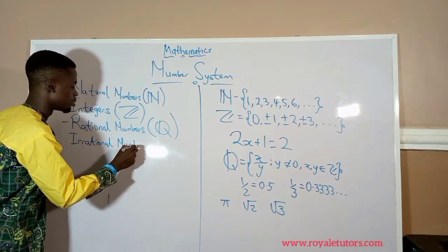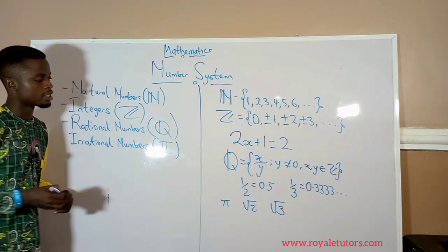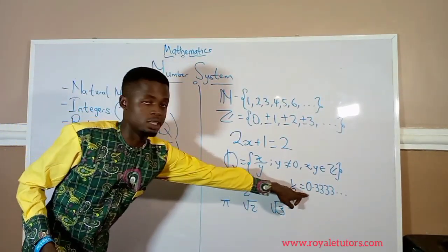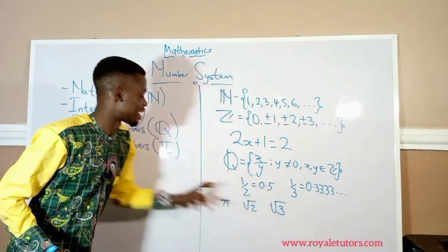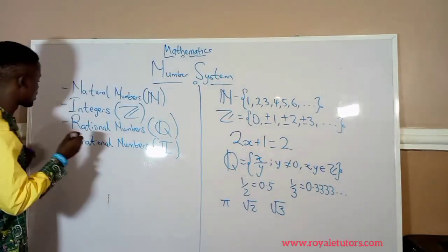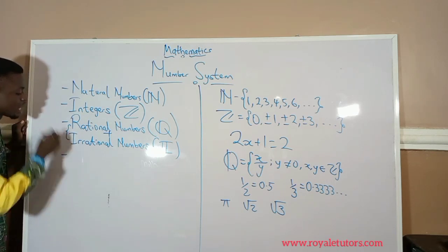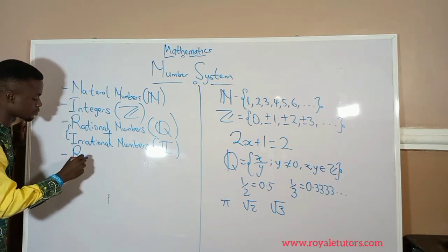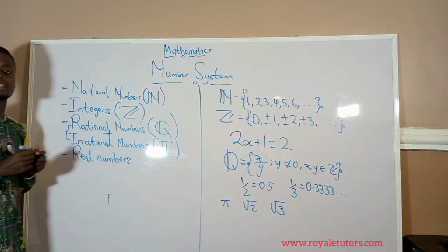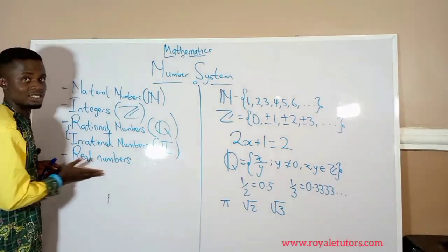Irrational numbers are the ones that when you convert them to decimals, they neither terminate nor reoccur — just like pi, square root of 2, and square root of 3. While rational numbers are the ones that either terminate or reoccur. When you take rational numbers and irrational numbers together, you get a new set called real numbers.